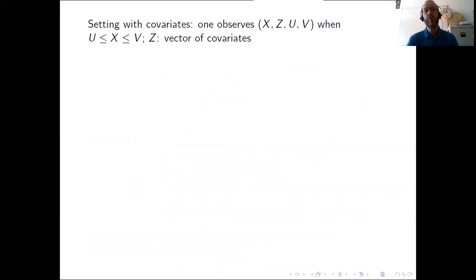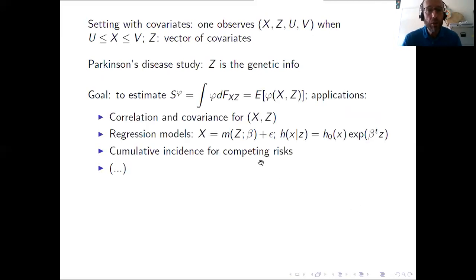But my setting is a setting with covariates. So besides X, U and V one observes a vector of covariates Z which in the Parkinson's disease study is the genetic information. So Z may contain in practice numerical, categorical covariates, discrete or continuous, etc. So our approach is completely general to this regard. And our goal is to estimate this general functional appearing here which is indeed a mathematical expectation. It is the mathematical expectation of a general transformation of X, Z.